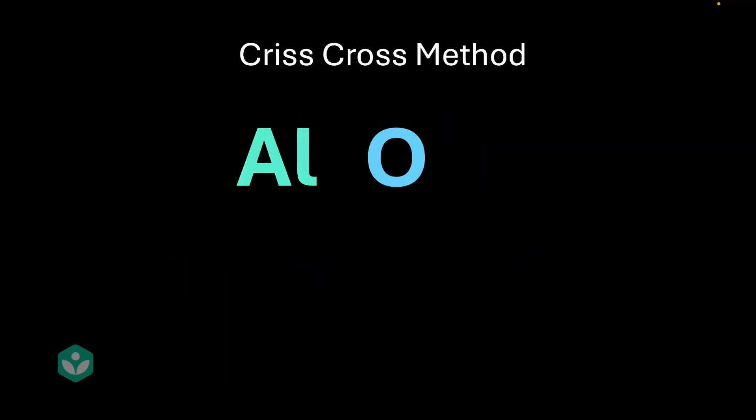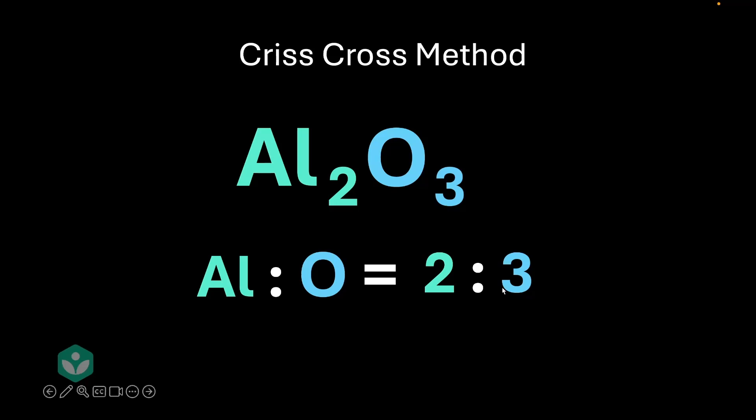Let's move on to our next example. This is with aluminium and oxygen. Let's write down their valencies, 3 and 2 and do our cross multiplication. There you go. We've got Al2O3. For every two atoms of aluminium, we have three atoms of oxygen. Amazing.